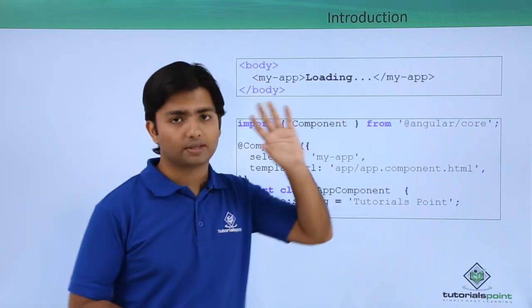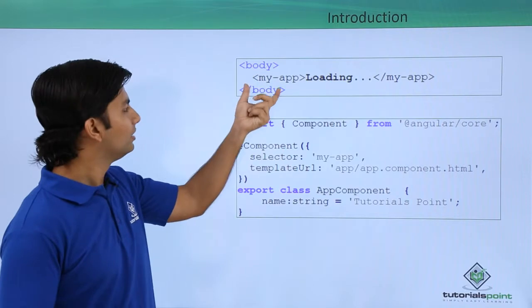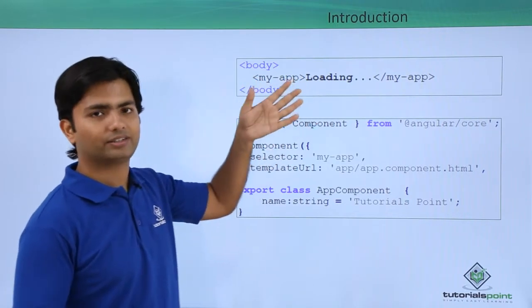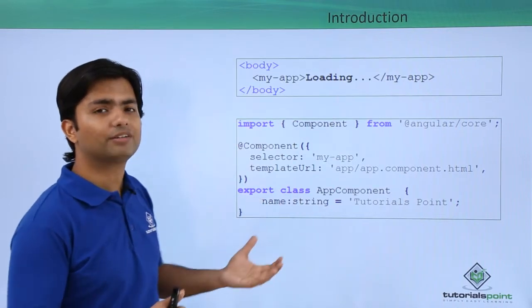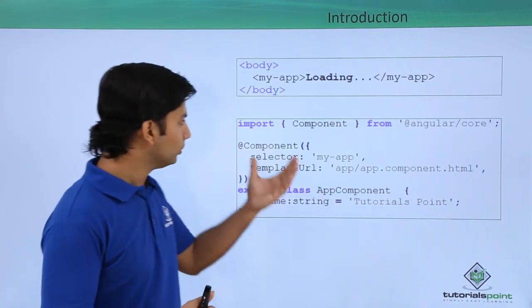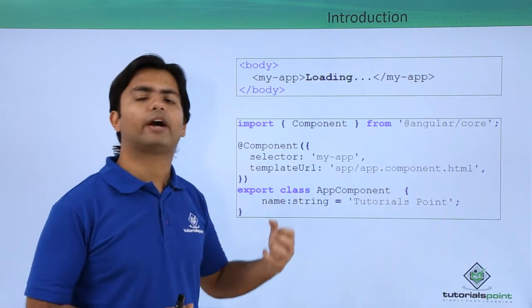like in the index.html in the main page, you see there is my-app, there is a tag. But in the background what this my-app actually means, because it is not a predefined HTML tag. So how are you going to find the details about it?